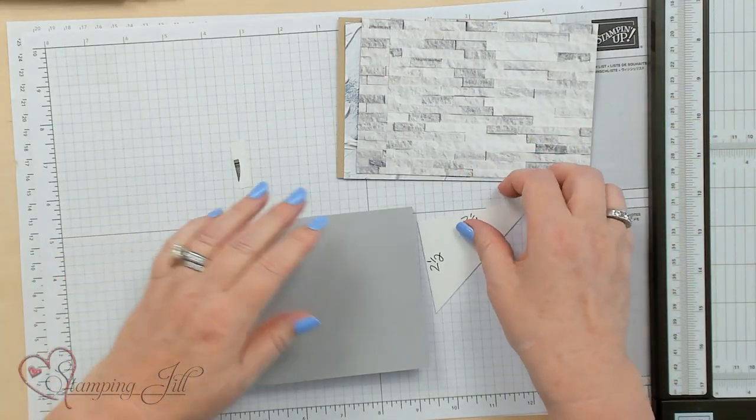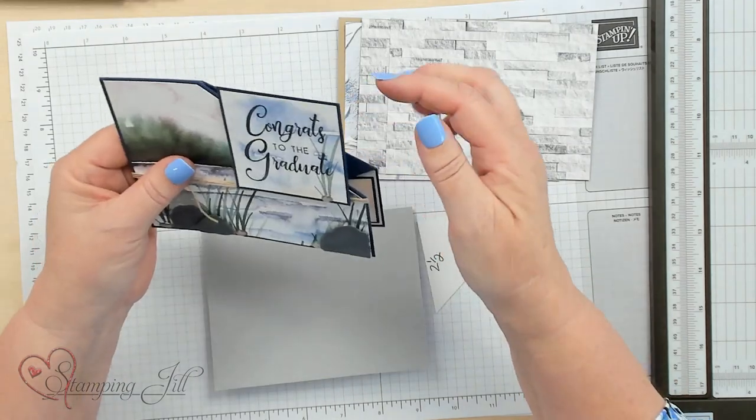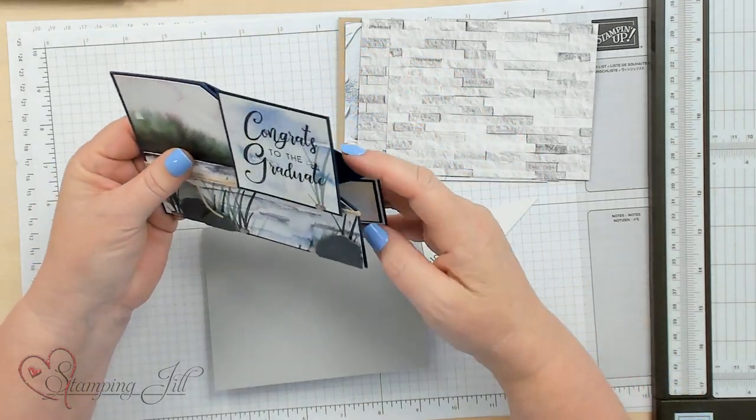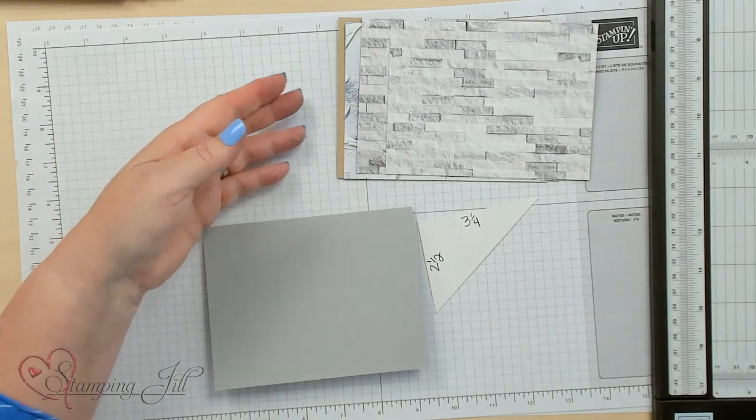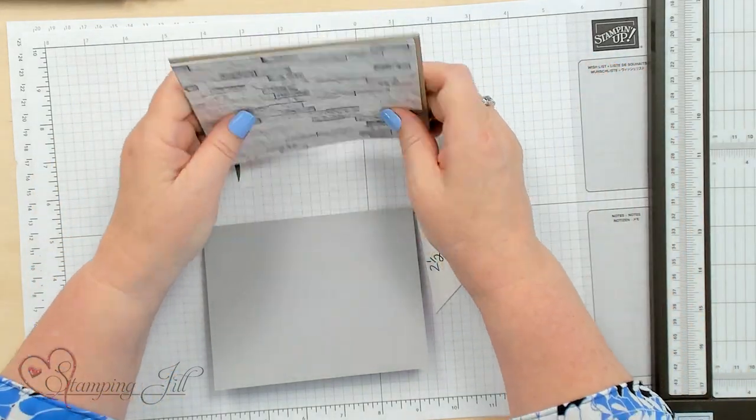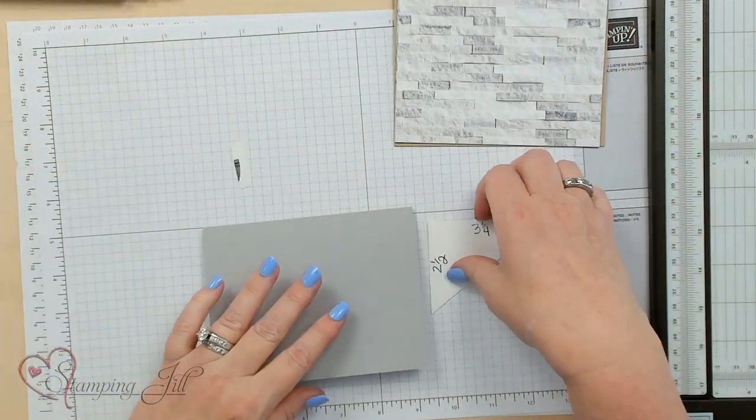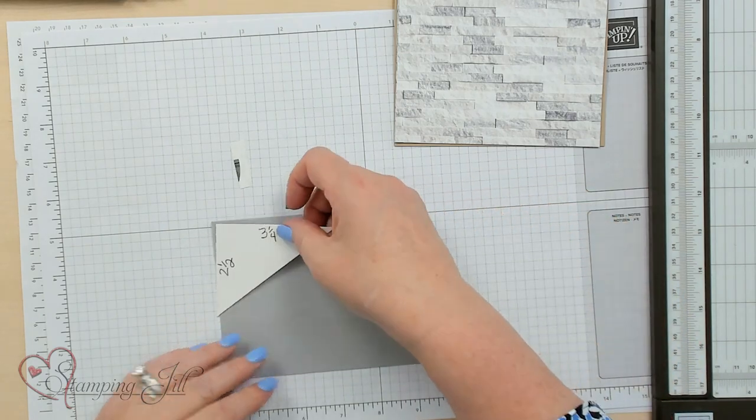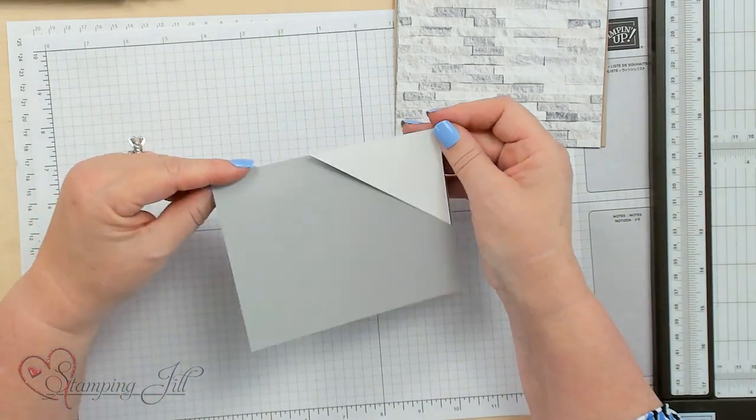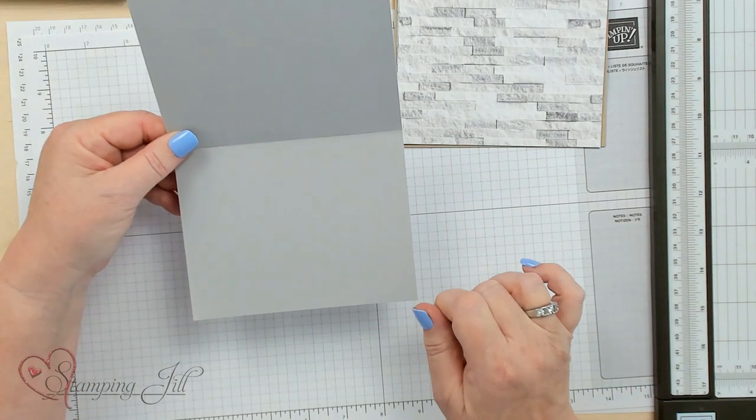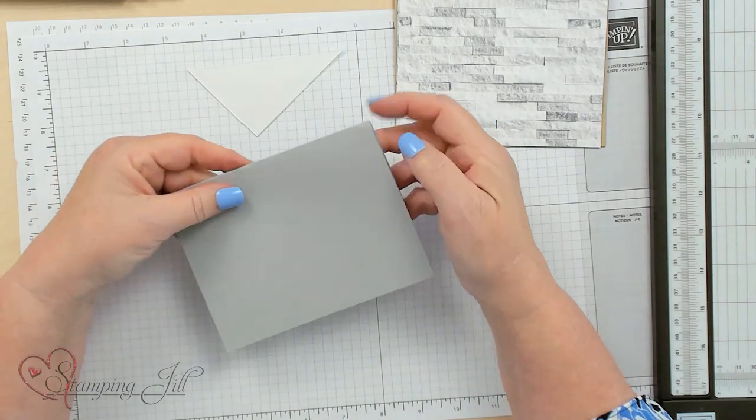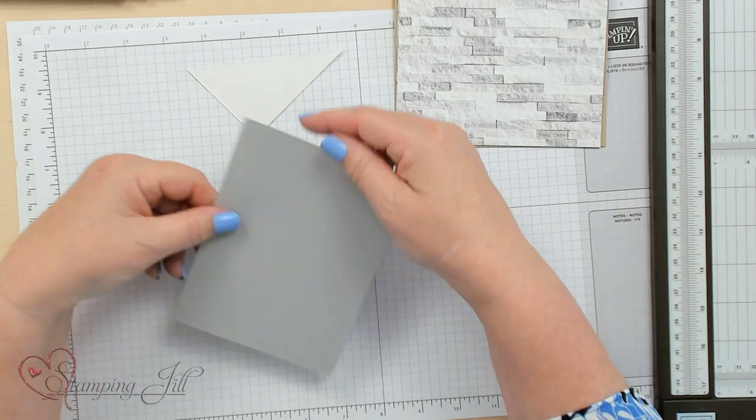In order to make this card you want to make a diagonal fold so it pops up and you'll want to cut your paper with that diagonal fold. This cardstock right here is in Smoky Slate. I'm just making a card that's eight and a half by five and a half, folded and scored at four and a quarter.